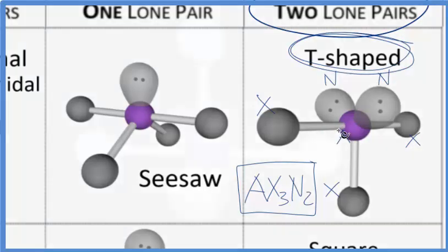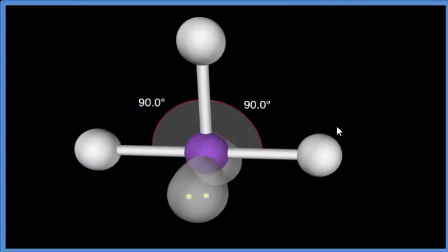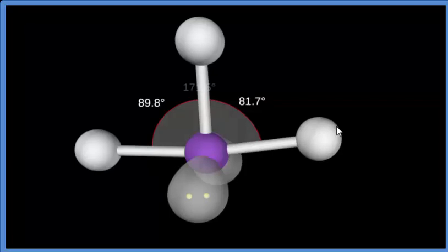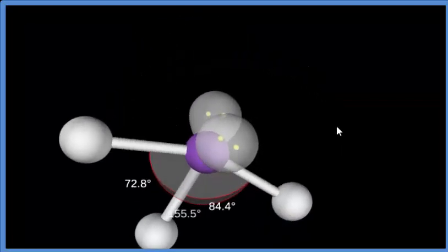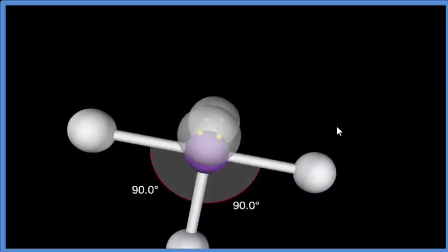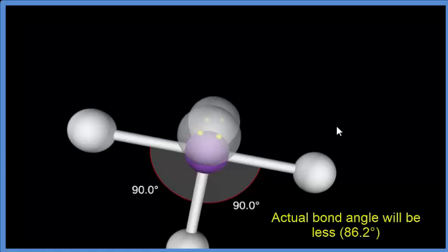Back to our model, we would expect these bond angles here to be 90 degrees. However, these fluorine atoms, they're pretty electronegative. These lone pairs here, they push down a little bit more. So you wouldn't have 90, you'd have kind of 86, something like that, around there. It would be less than 90 for these bond angles here.